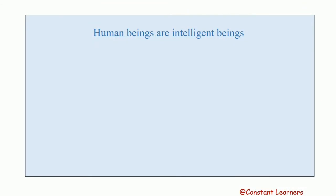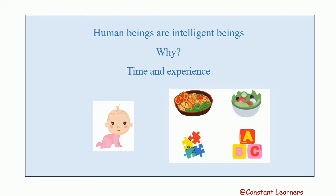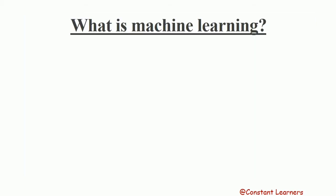Human beings are intelligent beings. Why do we say that? Because a human learns with time and experience. A child initially doesn't know what things are edible and what things are not. But with time, examples and experiences, he learns to identify the difference between food and other things. Then what is machine learning?